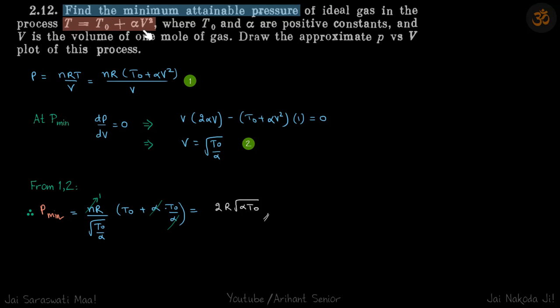We are given temperature as a function of volume and we need to find the minimum attainable pressure. So we'll write pressure as a function of volume and then just differentiate it.